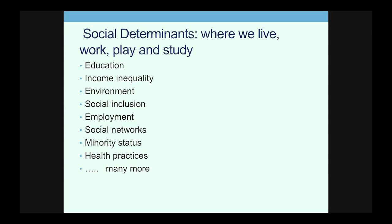What explains these? The social determinants of health. What determines how we live, work, play, and study? It is these things that are most closely associated with life expectancy: education, income inequality, both absolute income and degree of income inequality, issues of the built environment, social inclusion and exclusion — with socially excluded groups usually having much worse health — employment, social networks, minority status, health practices, and much more.